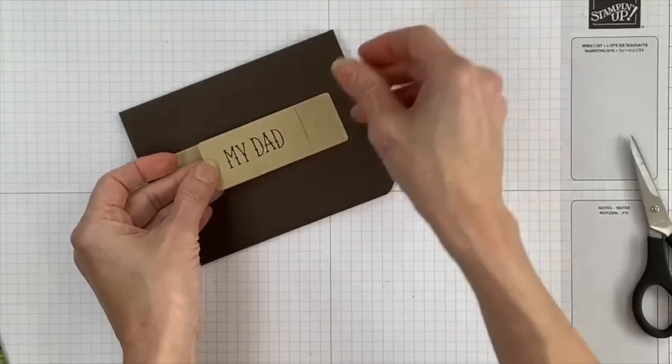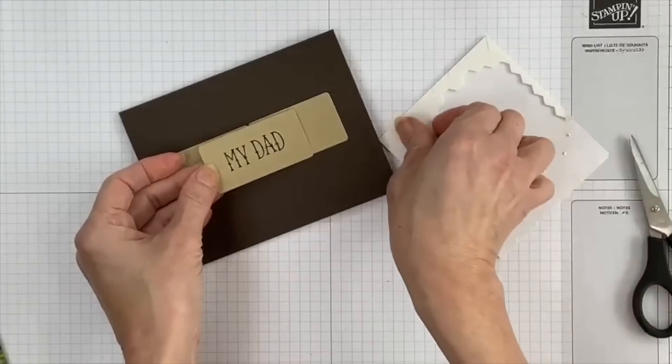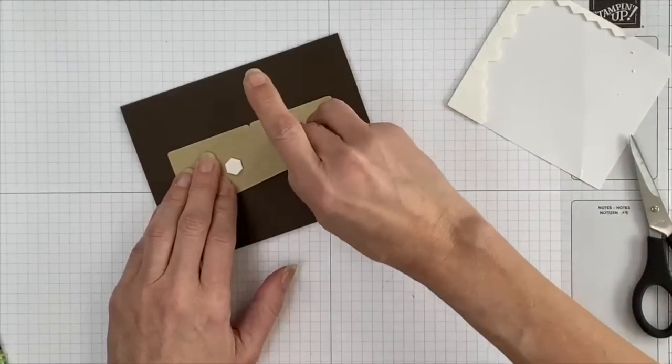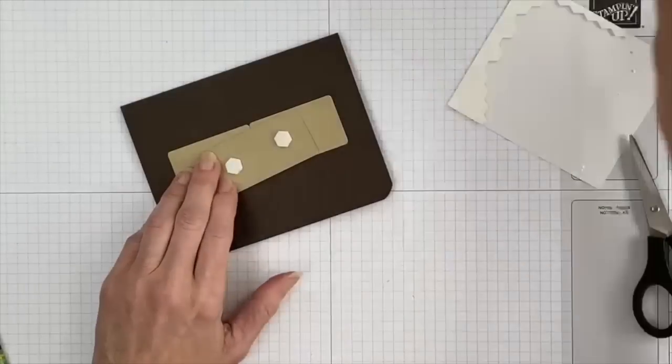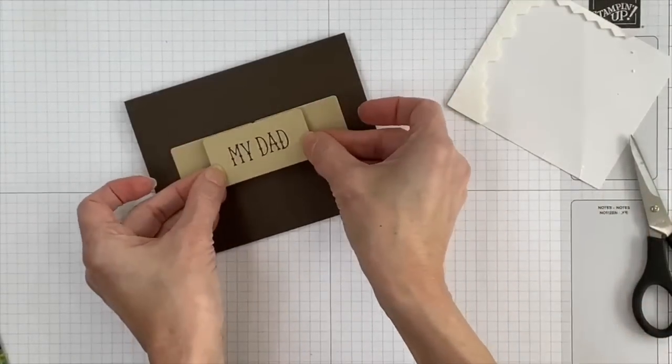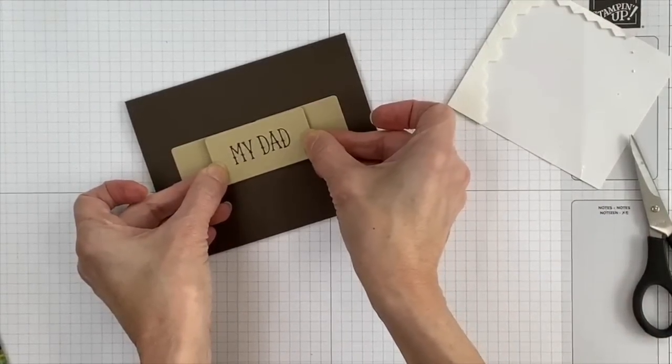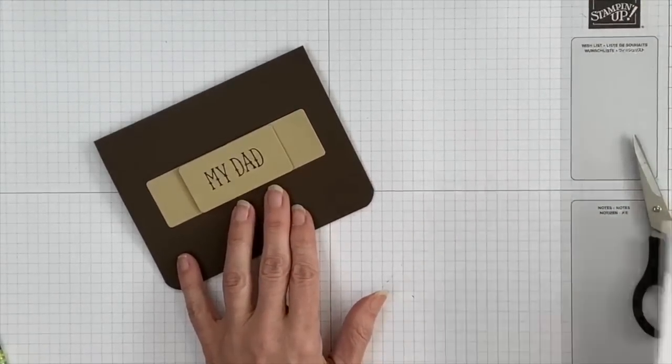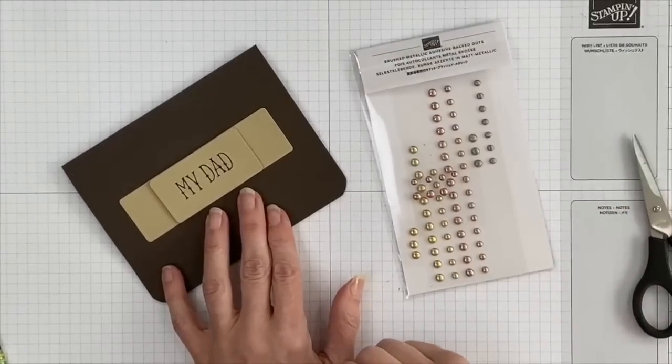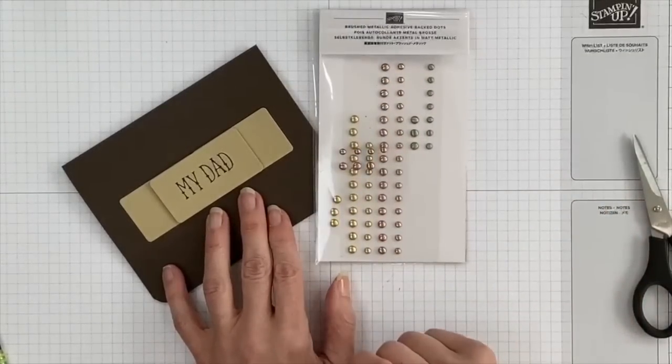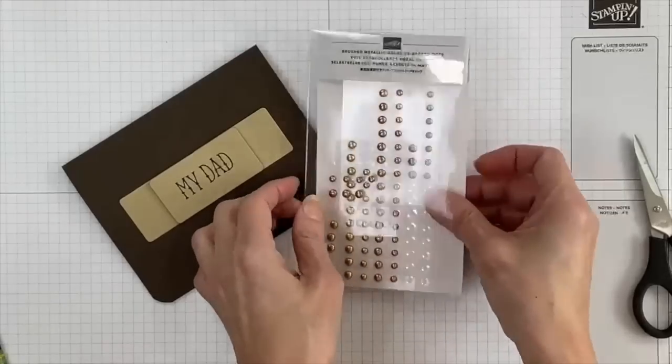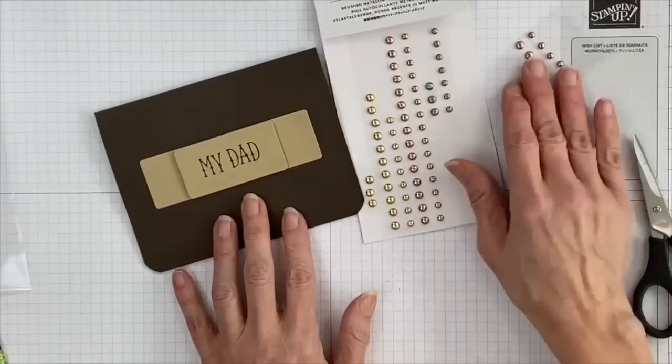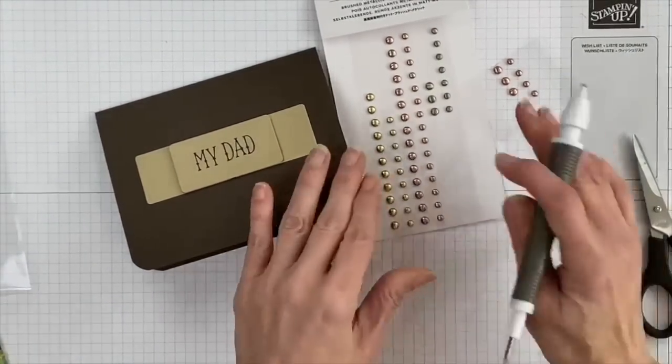And this piece will just get added with dimensionals. So we'll grab a couple of those, one on each side. And we'll center our handle over the top. This is why you want to have them in line with each other. And then we're going to add some embellishments. I'm using some brushed metallic adhesive back dots. And you can use whatever colors you want. I'm thinking for this one it might be kind of fun to add some copper. I don't know. Why not? Let's do copper. We have choices.